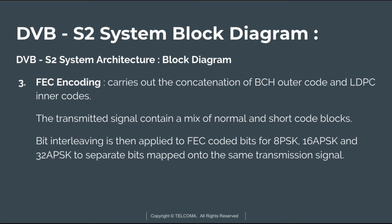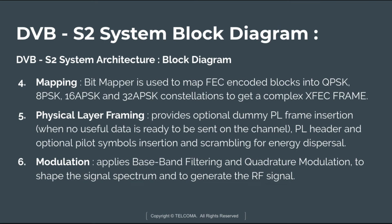The transmitted signal may contain a mix of normal and short code blocks. Bit interleaving is then applied to the FEC-encoded bits for 8PSK, 16APSK, and 32APSK, in order to separate bits mapped onto the same transmission signal.